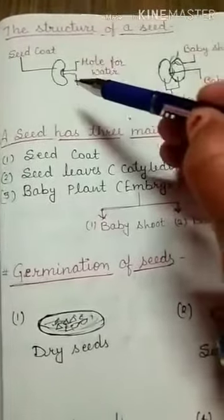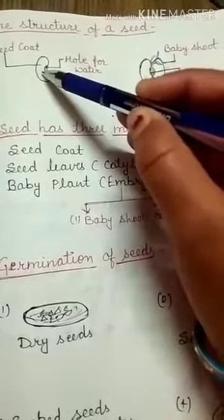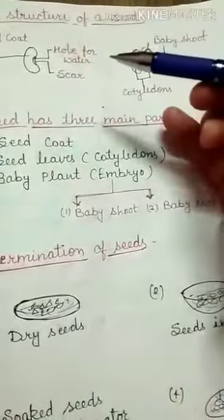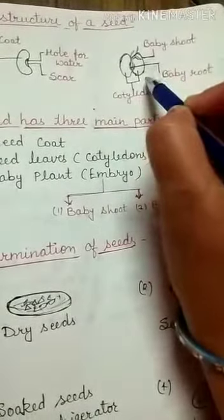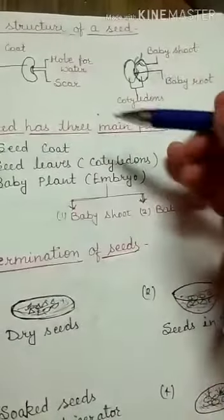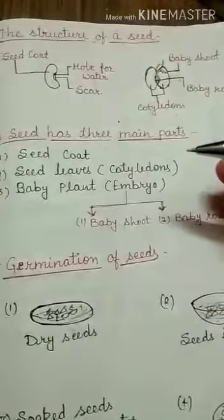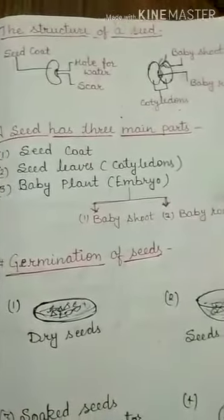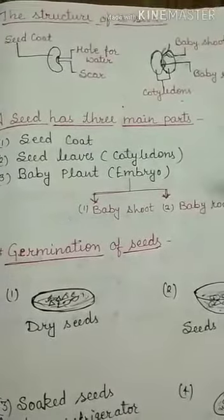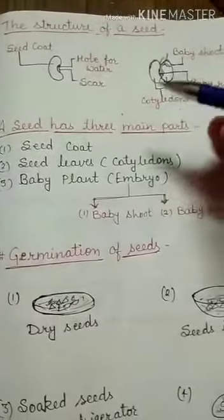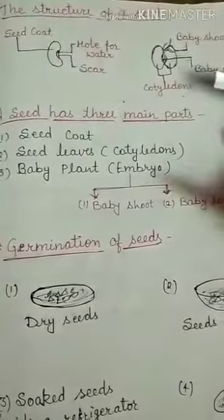The outer covering of a seed is called the seed coat, which protects the baby plant. If we break the seed along its joint it opens into seed leaves. These seed leaves are called cotyledons. They provide food to the growing plant as long as the baby plant does not grow green leaves; it depends on the food stored in the cotyledons.